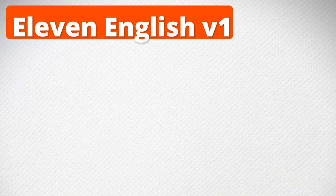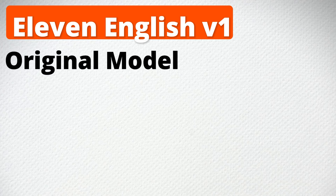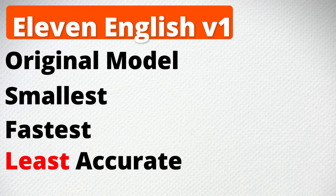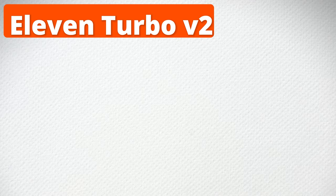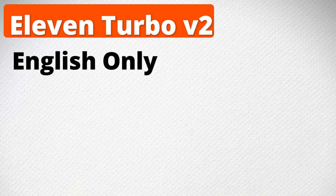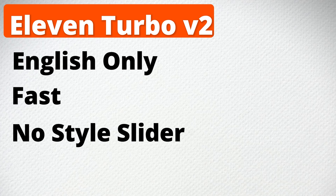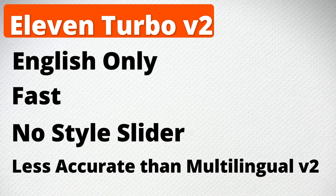ElevenLabs English V1 is an English-only model and this is the OG — the first ElevenLabs model. It has a very limited training data set. It's the smallest, but that also makes it the fastest. It is also the least accurate model that they have, so you probably want to avoid this one whenever possible. ElevenLabs Turbo V2 is an English-only model designed for fast generations, but to get that quick turnaround, this model does not have a style slider. Accuracy is good, but it may not be as good as Multilingual V2.